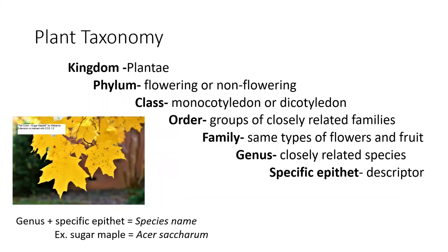When we talk about plant taxonomy, if you remember back in fifth grade science class, you learned kingdom, phylum, class, order, family, genus — and perhaps you learned 'species,' but actually that last one is 'specific epithet.' The species name is a combination of the genus and the specific epithet. So you take these two classifications and put them together, and that is your species name.